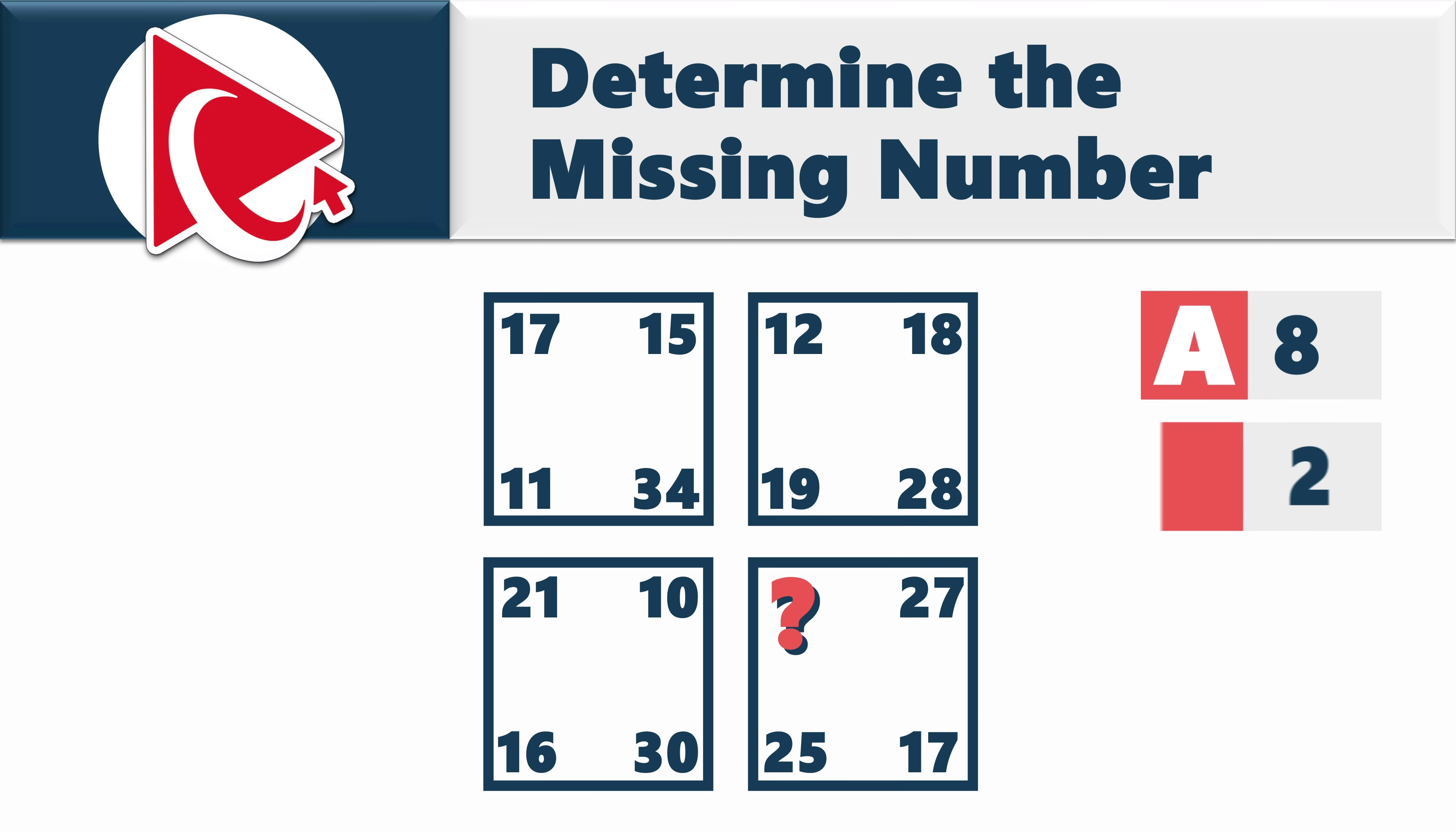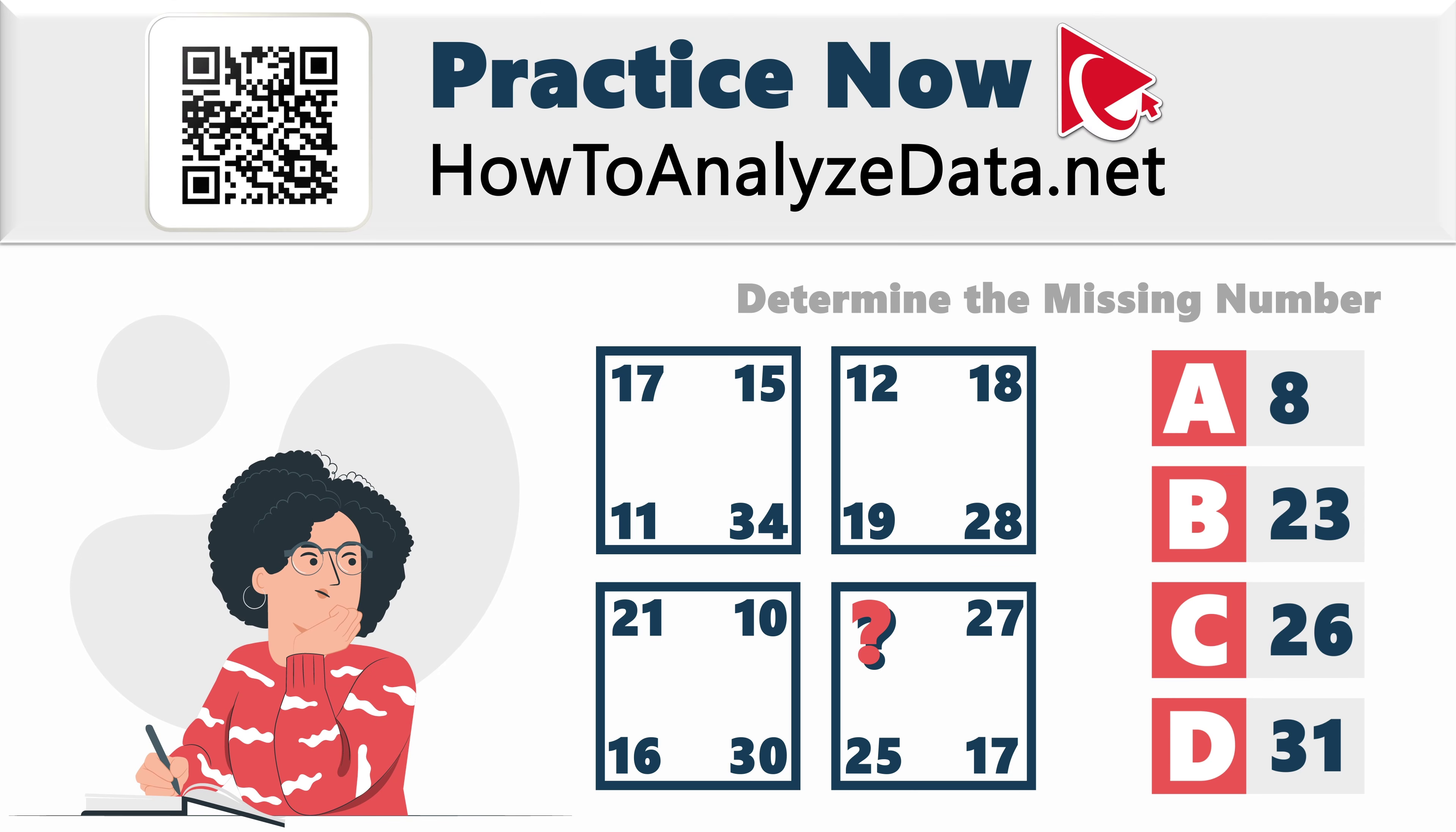You need to calculate and select out of four possible choices: choice A, 8, choice B, 23, choice C, 26, and last but not least, choice D, 31. Do you think it's a tough challenge? Well, the solution might be simpler than you think. Look, all numbers here are two-digit numbers. And then choice A is only one digit, so probably we can eliminate it.